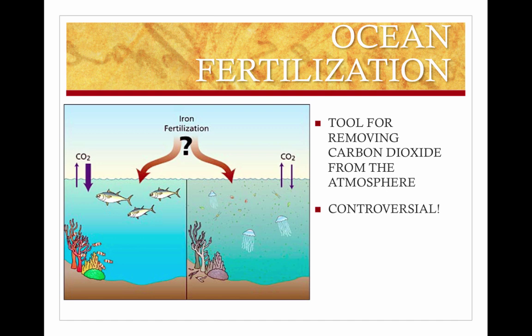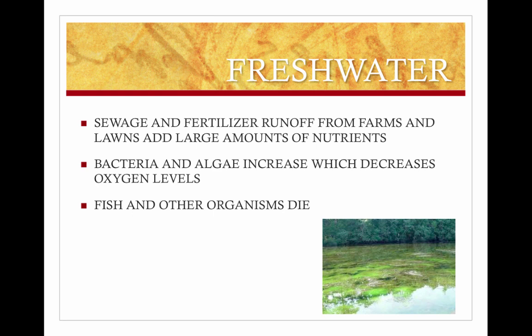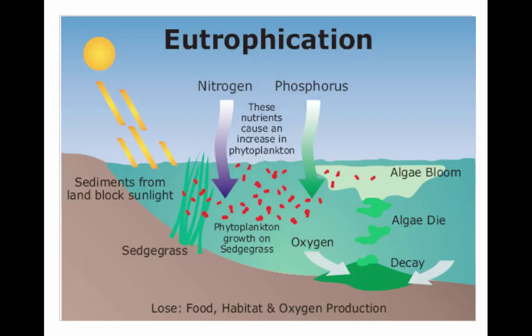The more algae, the more CO₂ comes out of the atmosphere. However, for obvious reasons, this can be very controversial. Upwelling is a natural process where deep, nutrient-rich water circulates to the surface, causing exceptionally high primary production. In freshwater, sewage and fertilizer runoff from farms and lawns add large amounts of nutrients — there's actually something called the Home Depot effect, where fertilizer runs off into nearby bodies of water, causing an increase in bacteria and algae, which decreases oxygen levels. This process is called eutrophication.